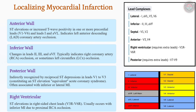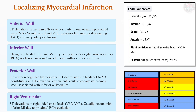Inferior MI, denoted by leads II, III, and AVF, typically indicates right coronary artery or left circumflex occlusion and may be complicated by AV conduction disturbances. Posterior MI is inferred from ST depression in V1 to V3 and confirmed by posterior leads V7 to V9 revealing ST elevation. Right ventricular MI presents with ST elevation in right-sided leads V3R to V6R, often coexisting with inferior MI and requiring distinct management. Precise localization aids in determining infarct severity and predicting potential complications.